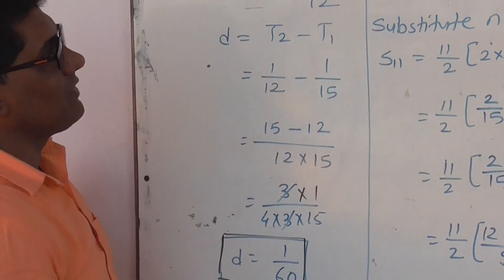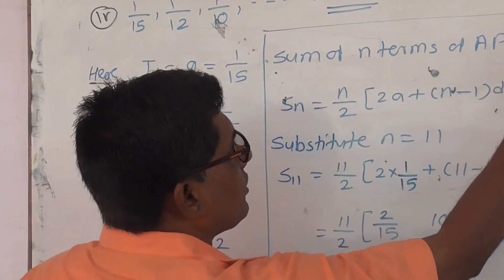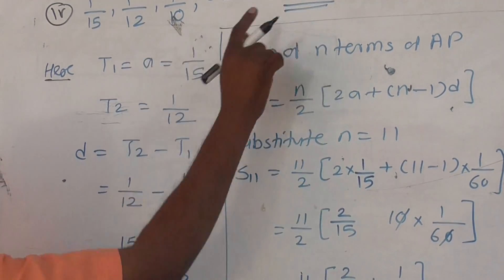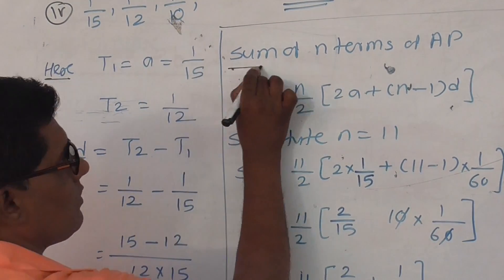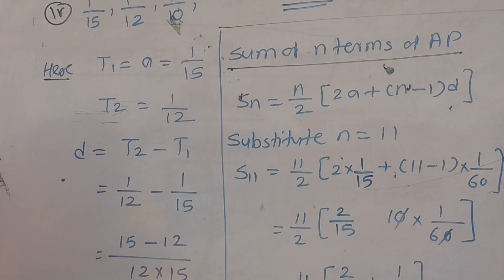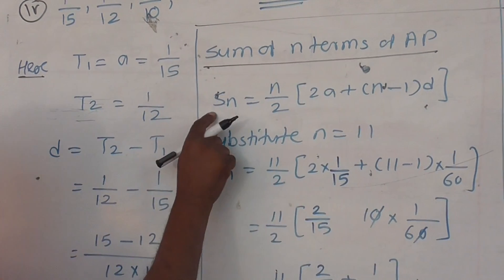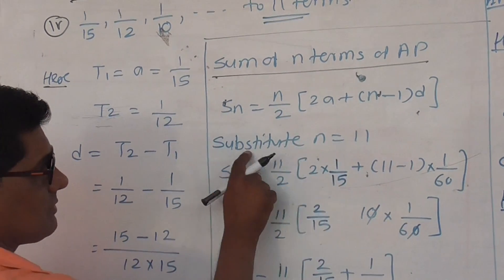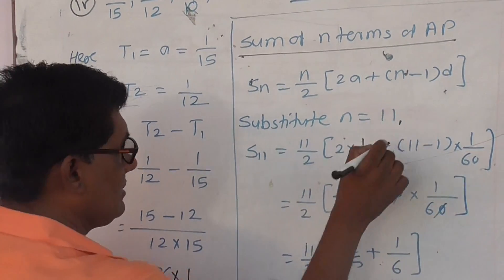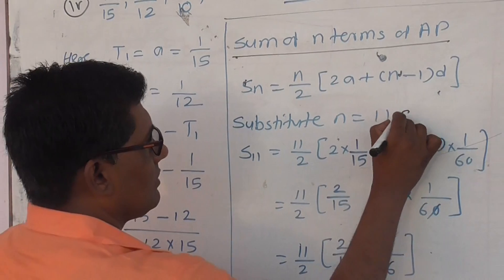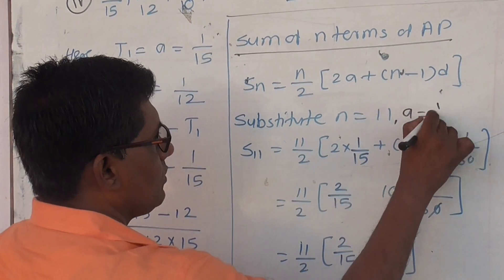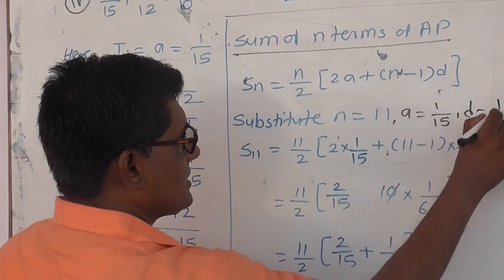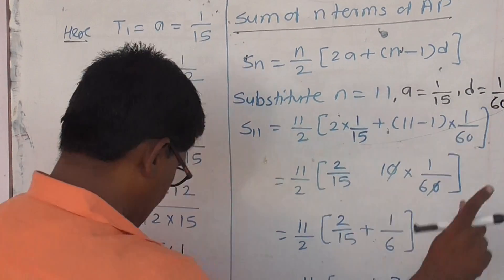We have n equals 11. Sum of n terms of arithmetic progressions formula is Sn equals n by 2 times 2a plus n minus 1 into d. Substitute n equals 11, a equals 1 by 15, and d equals 1 by 60.